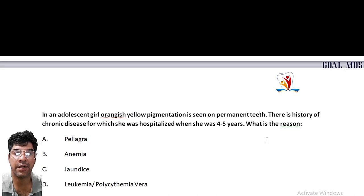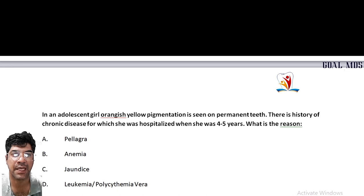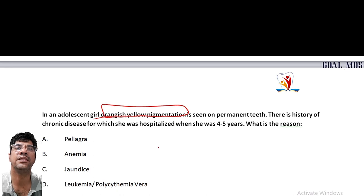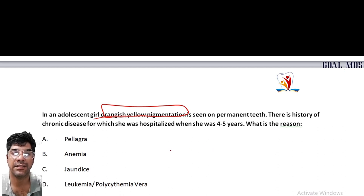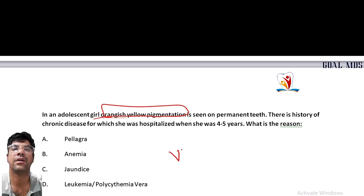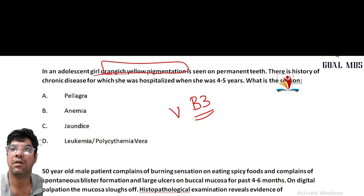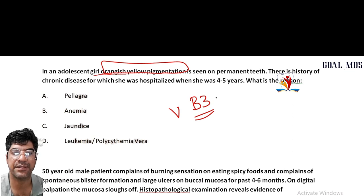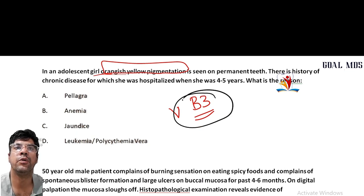An adolescent girl shows orangish-yellow pigmentation on the permanent teeth with a history of chronic disease requiring hospitalization. The reason could be pellagra. The orange-yellow pigmentation on permanent teeth with history of chronic disease is mostly due to pellagra, which is caused by deficiency of vitamin B3.